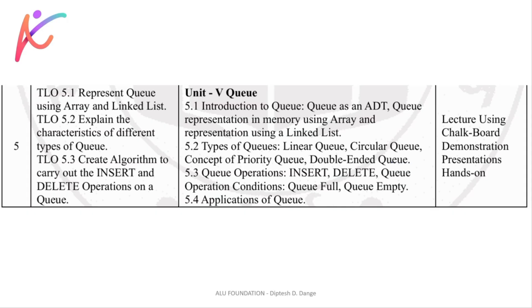In this video we will see linear Queue, circular Queue, priority Queue and double ended Queue. Double ended Queue is a different variant, basically we can call it that.